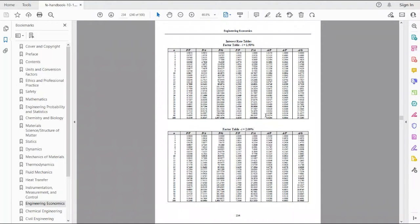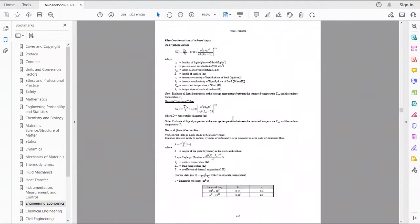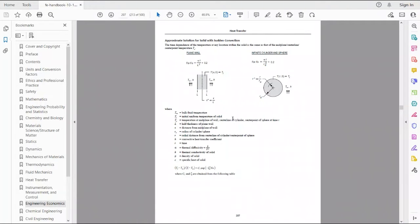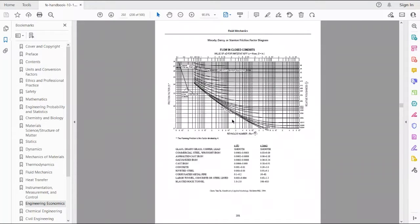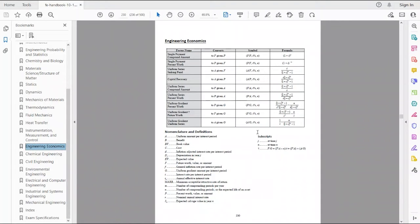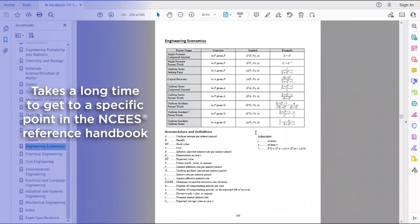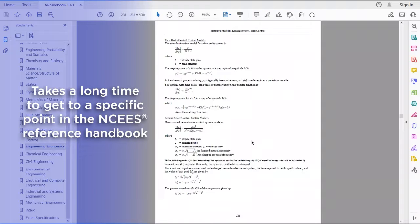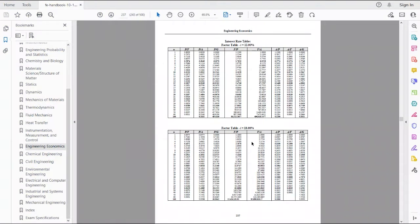But when the exam topic changes from engineering economics to properties of electrical material, then I'll have to scroll all the way back up to electrical and computer engineering and try to find where that is. You can see the limitations of this approach of just scrolling, because on the day of exam you really won't have that much time to scroll upwards and downwards. So it's not necessarily a good strategy.